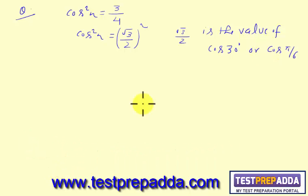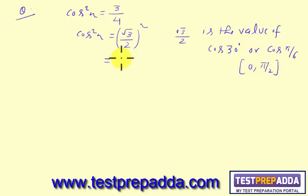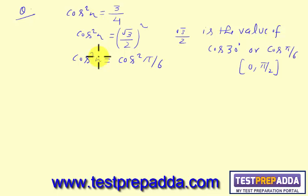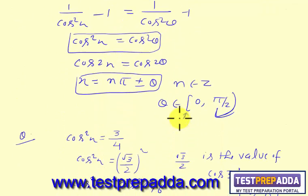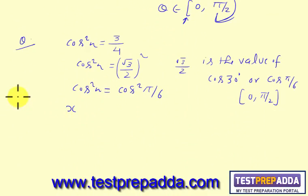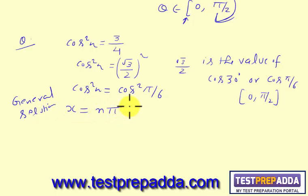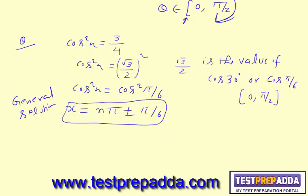Since π/6 lies in the interval [0, π/2], we can write this as cos²x = cos²(π/6). Applying the general solution formula, x = nπ ± π/6, where n belongs to integers.